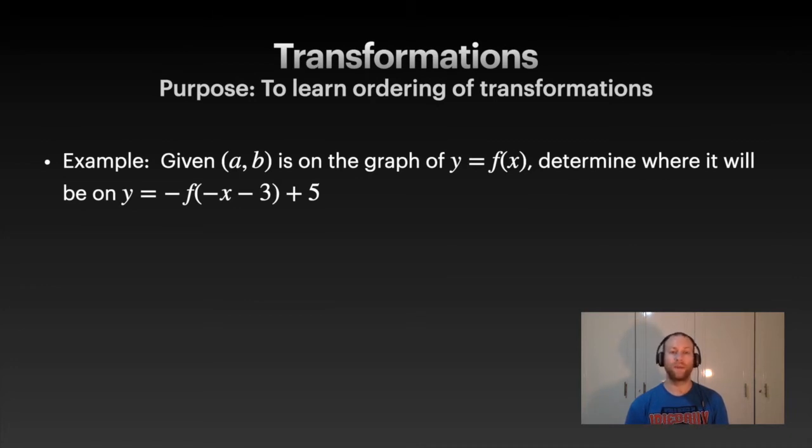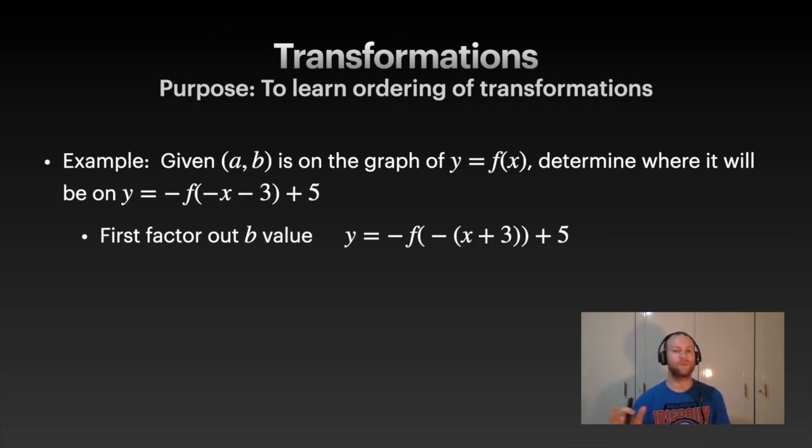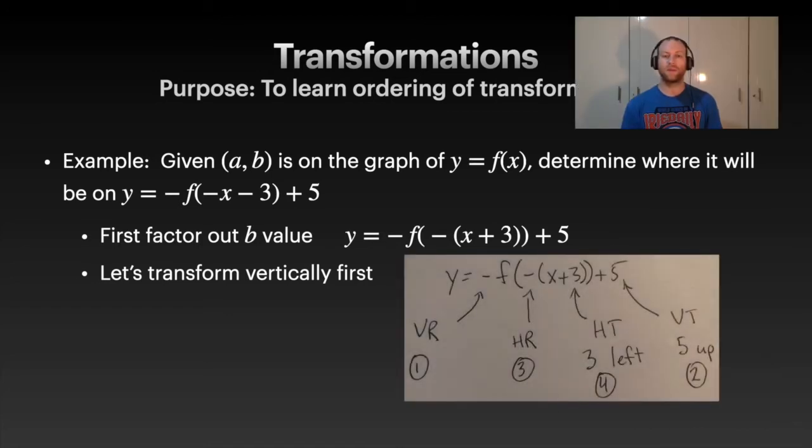Let's do an example. Given the point (a, b) is on a graph of y = f(x), let's figure out where it would be on this new function. First, we have to factor out the b value. Always factor out that b. There's a negative in front of the x, we need to move that out, so we end up with y = −f(−(x + 3)) + 5. We can look at transforming it vertically first. The negative in front, that's a vertical reflection, VR. HR horizontal reflection, HT horizontal translation, VT is vertical transformation. Rather than writing all those words out, you can write these shortcuts.